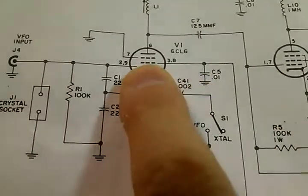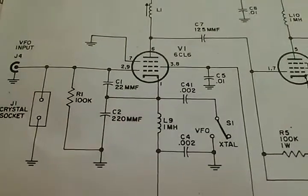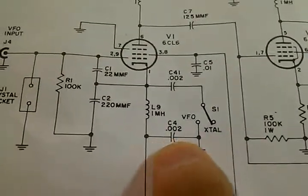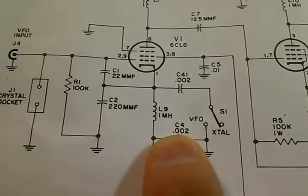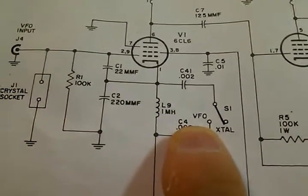But again, you make sure you've got the bypass on grid number two or it's probably not going to work. This stuff over here, one was for crystal and one was for the variable frequency oscillator or a function generator.